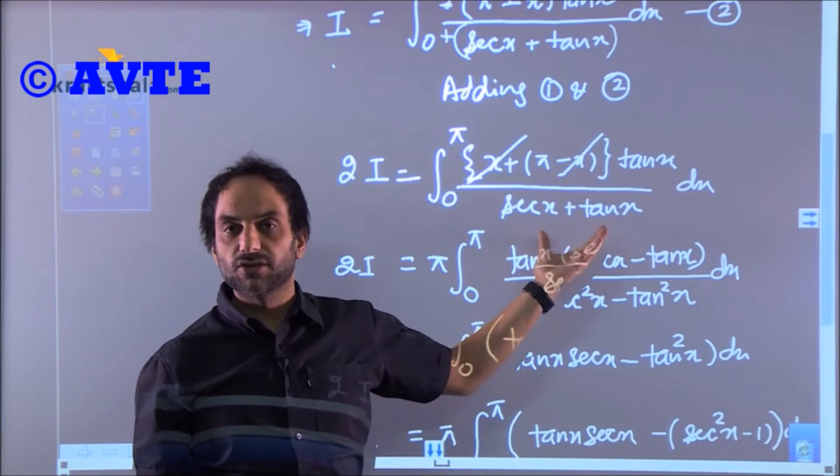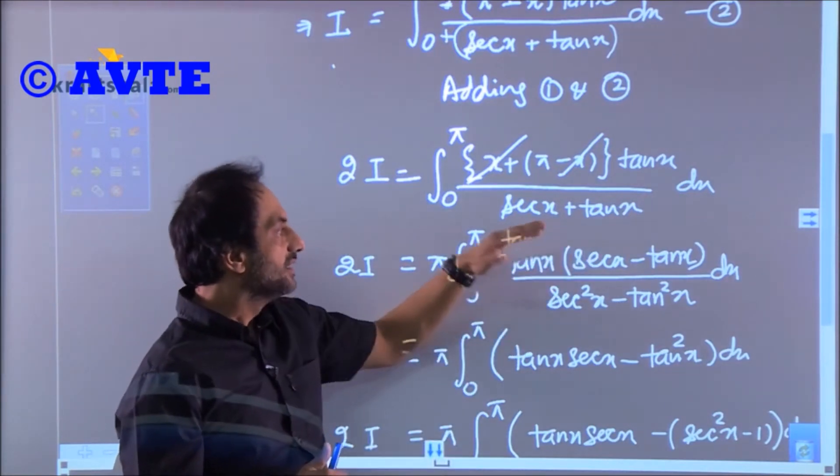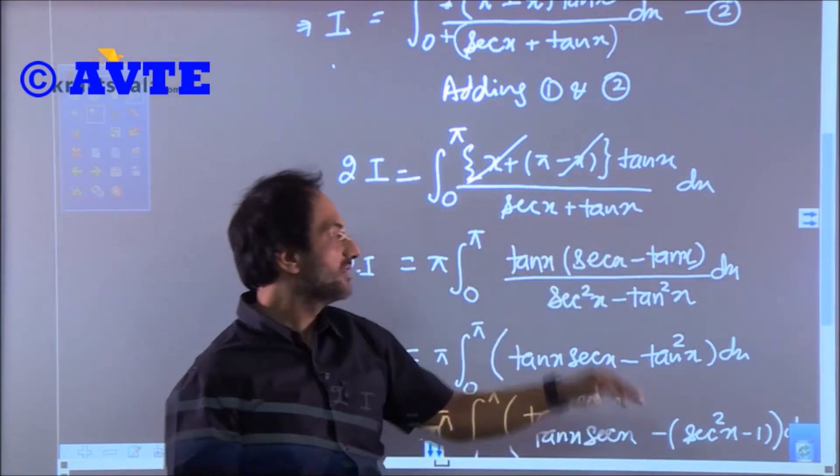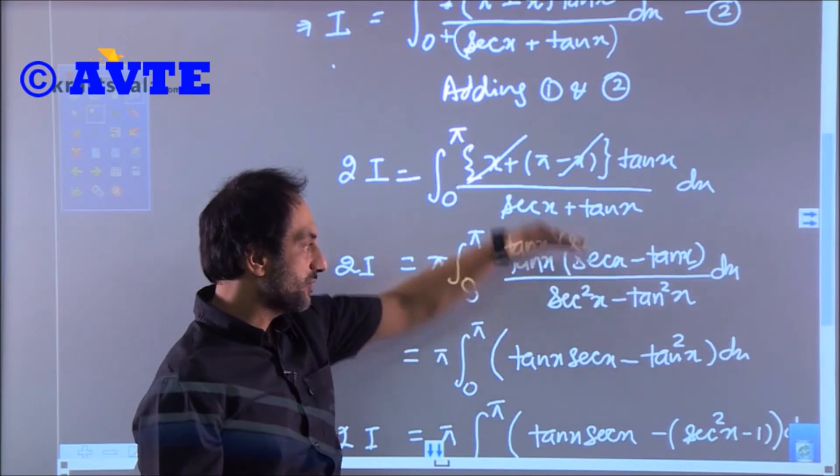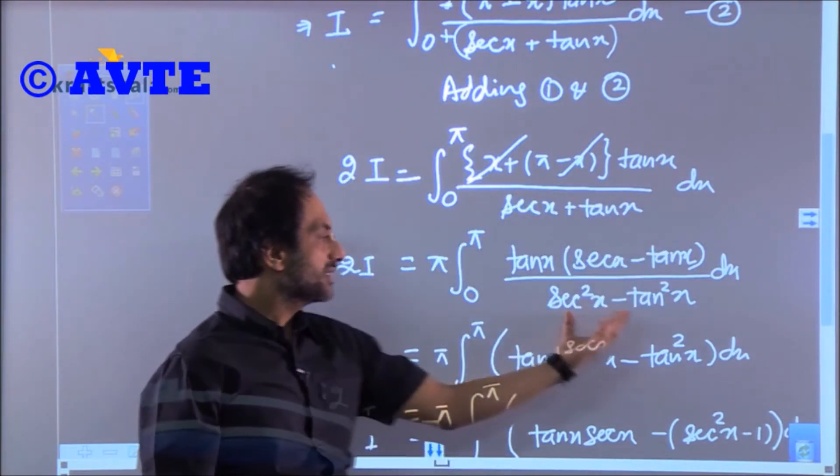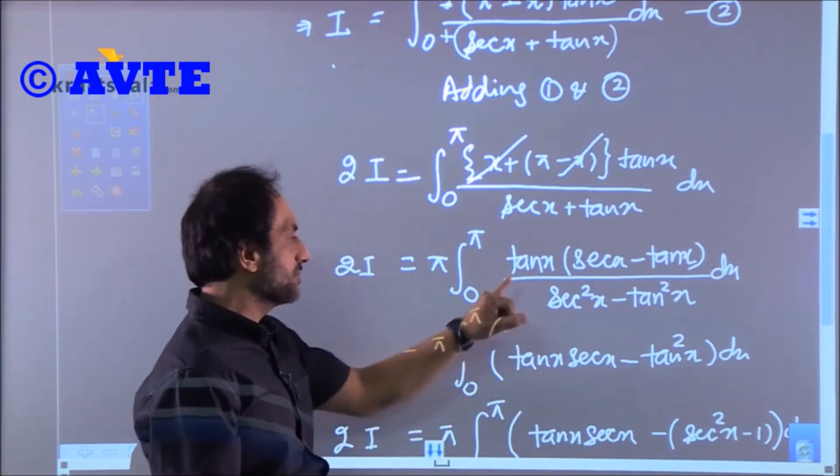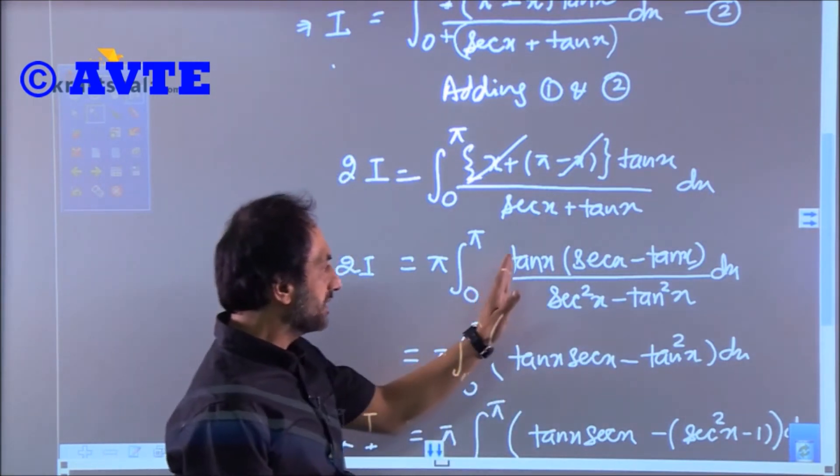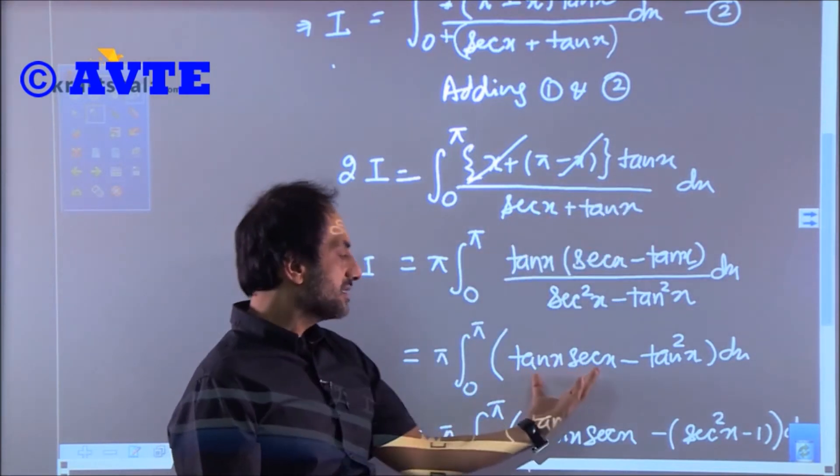Whenever there is sec x + tan x in the denominator, it is always good to rationalize. It goes up to 99% in integration—whenever you have sec x + tan x, you always rationalize. What we have rationalized is we've multiplied and divided by (sec x - tan x). What is the denominator? That is one, using the identity.